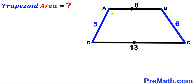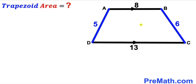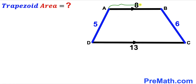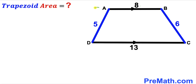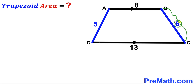Welcome to pre-math. In this video we have got trapezoid ABCD such that base AB is parallel to base CD. The base AB length is 8 units, base CD length is 13 units, side AD length is 5 units, and side BC length is 6 units. Our task is to calculate the area of this trapezoid ABCD.